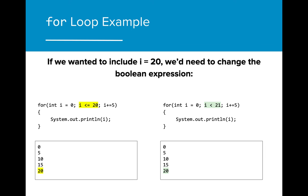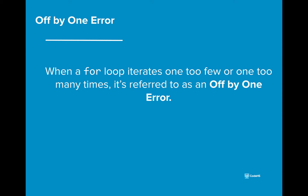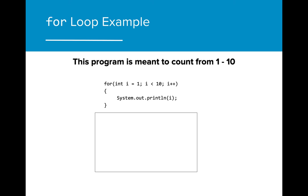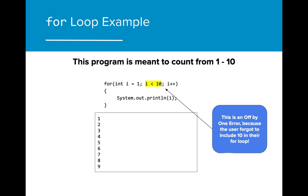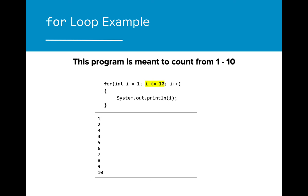If we fail to change the Boolean expression, then the values that are output are going to be off. When a for loop iterates one too few or one too many times, it's referred to as an off-by-one error. Let's say we wanted to create a program that counts from 1 to 10. When we run the code, we can see that the values printed only go up to 9, because the user forgot to include the value 10 in the Boolean expression. If we change this to less than or equals 10, the program will print the intended result. We could have also changed it to less than 11 to achieve the same result.